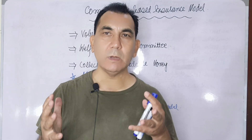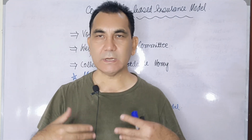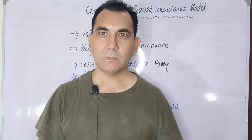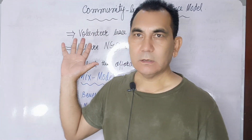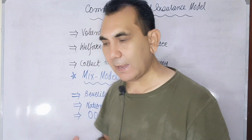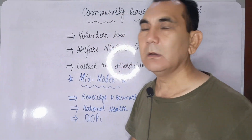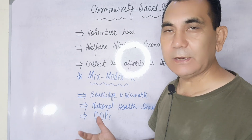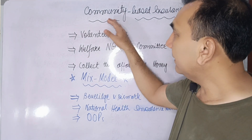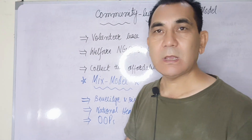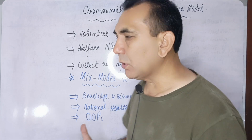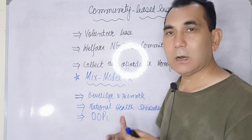Welcome viewers once again to this lecture in the series on social health protection. This is another type of social health protection model, running in many countries like India and African countries. It is called the community-based insurance model.